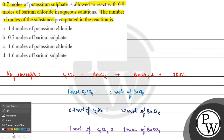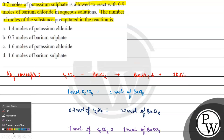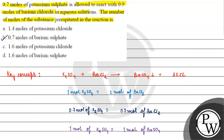Coming back to the question, we are asked the number of moles of the substance precipitated in the reaction. The precipitate formed is barium sulfate. The correct answer for this question will be option B — 0.7 moles of barium sulfate are formed. I hope you understood it well. Thank you and all the best.